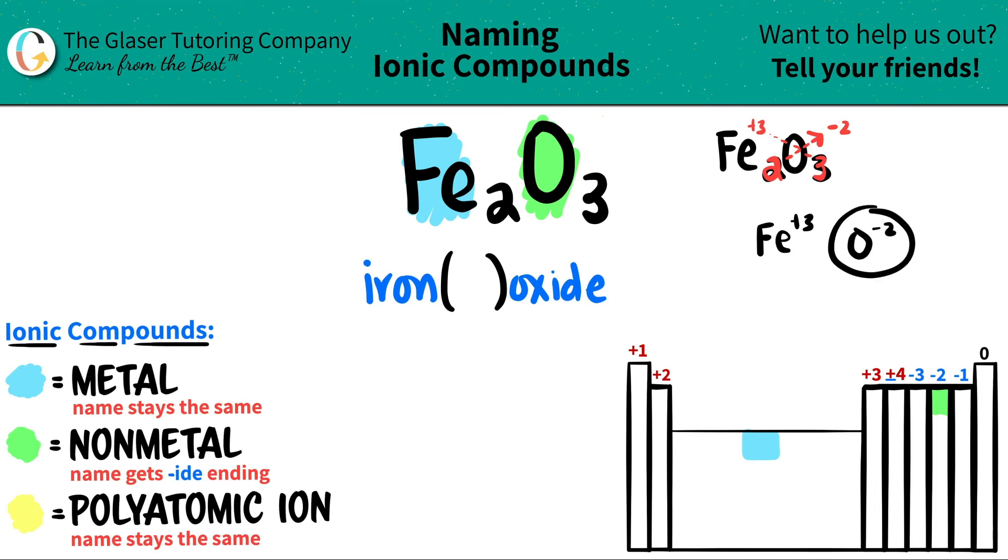Just check this out to make sure that it's correct. And oxygen is in the negative two oxidation state trend. So this checks out. And if that checks out, this has to check out. So the charge of iron was a three.